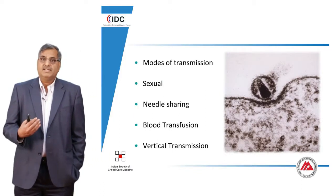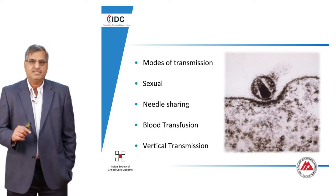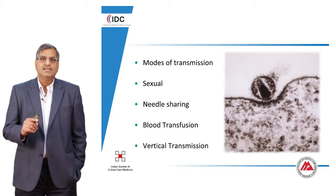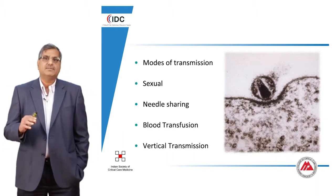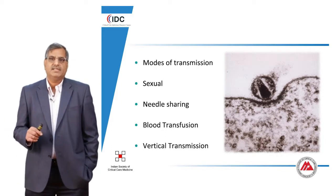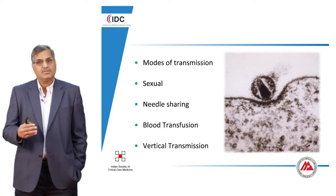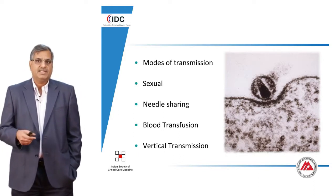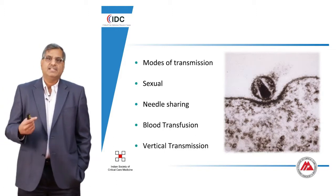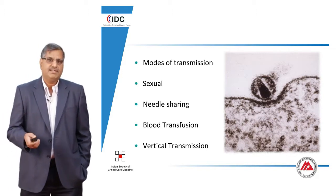We should know about how HIV is being transmitted, because there are several myths about HIV transmission. HIV is mainly transmitted by the sexual route — this could be either heterosexual or homosexual, and this is the predominant mode of HIV transmission. The other important routes, which are now less common, are mother-to-child HIV transmission, infected syringes and needles, and blood and blood products.